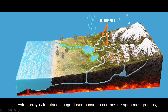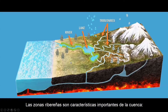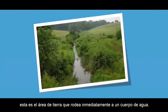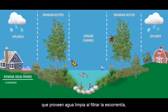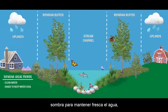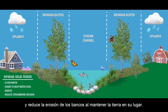These tributary streams then flow into larger bodies of water, such as lakes or rivers. Riparian areas are important features of the watershed. This is the area of land immediately surrounding a water body. Plants and trees in the riparian area function as a buffer that provides clean water by filtering runoff, shade to keep the water cool, habitat for birds, fish, and other wildlife, and reduces stream bank erosion by holding soil in place.